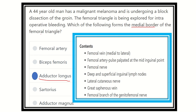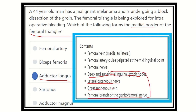Beyond the three main contents — femoral artery, femoral vein, and femoral nerve — additional structures present in the femoral triangle include the superficial and deep inguinal group of lymph nodes, the lateral femoral cutaneous nerve, the great saphenous vein, and the femoral branch of the genitofemoral nerve. These are also contents of the femoral triangle. Thank you.